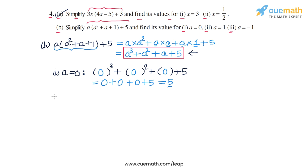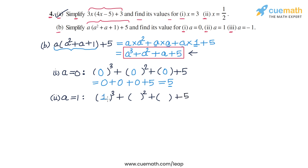For a equal to 1, substituting into a cubed plus a squared plus a plus 5, we get 1 cubed plus 1 squared plus 1 plus 5, which equals 1 plus 1 plus 1 plus 5. In total, this is equal to 8. So for a equal to 1, the expression's value is 8.